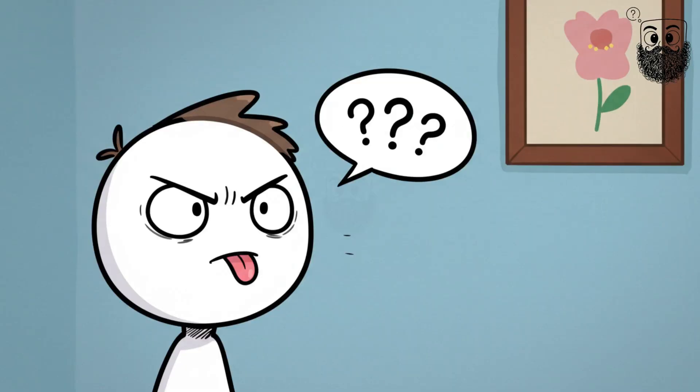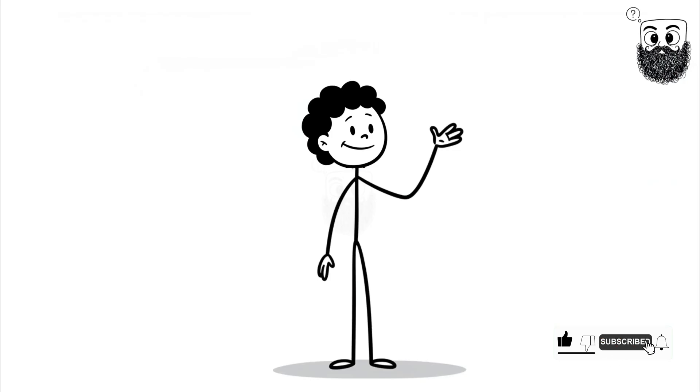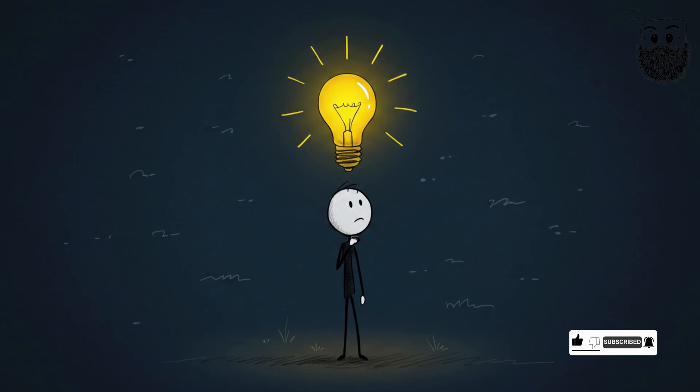Number 5. When words hide in your brain. Sometimes a word is right there, on the tip of your tongue, but you just can't grab it. This is the tip of the tongue phenomenon.